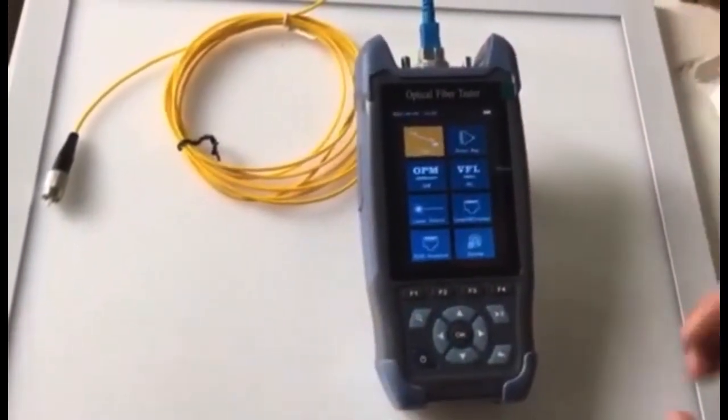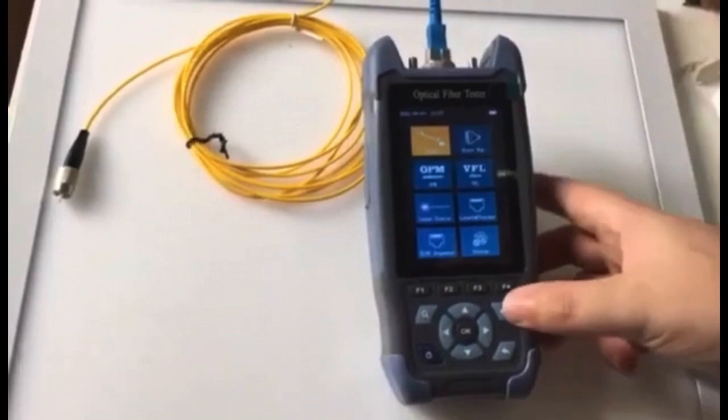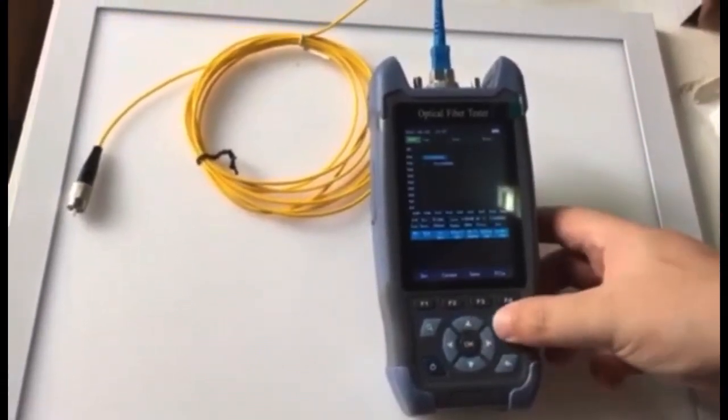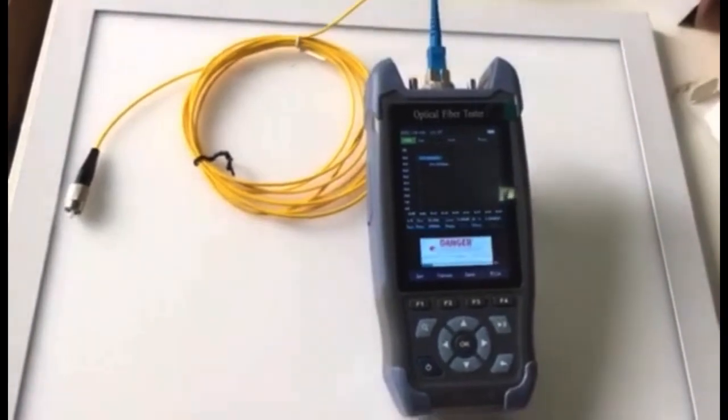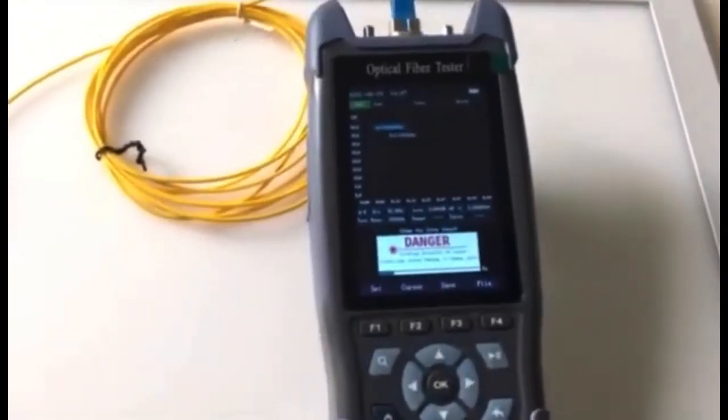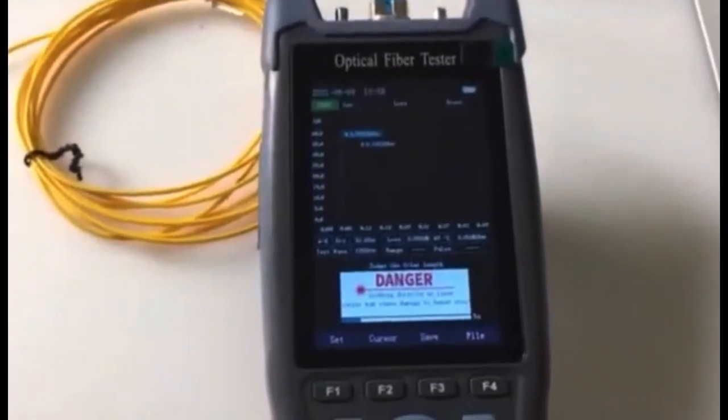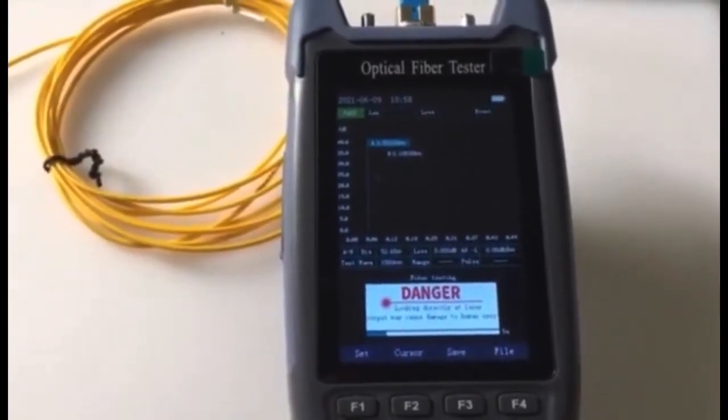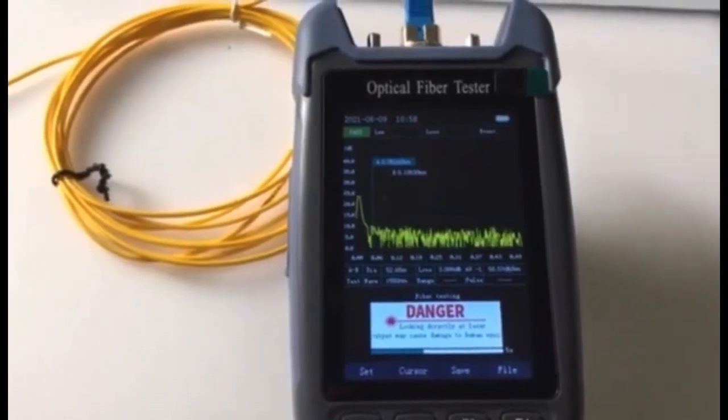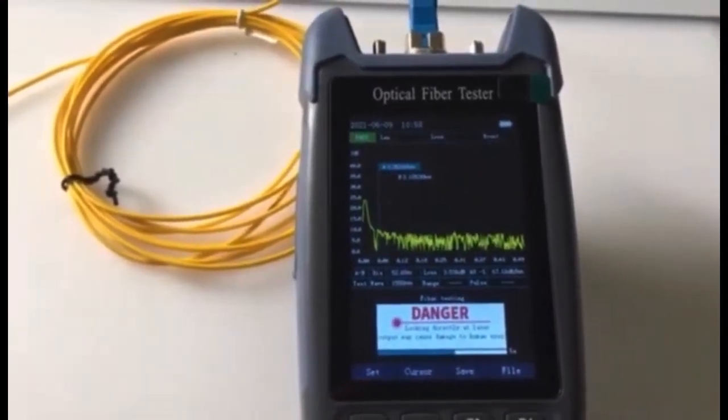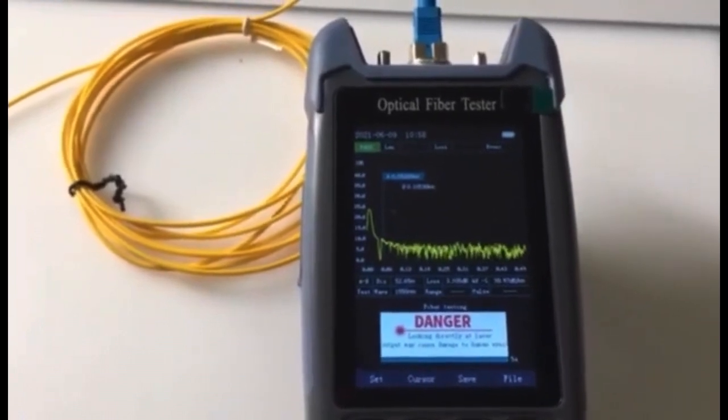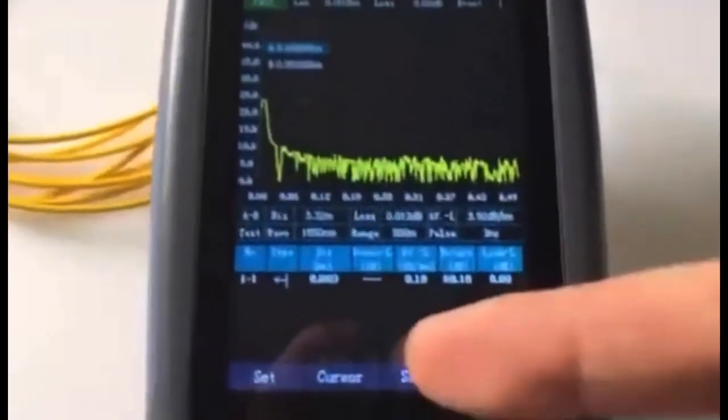We don't need to do any setting and use the auto test. Just press one button, press this button, and the OTDR will test the fiber. It will test around five seconds to get results. It is testing now.